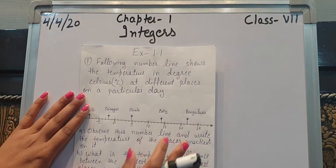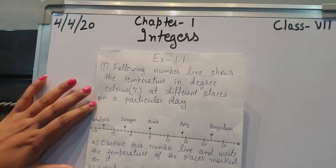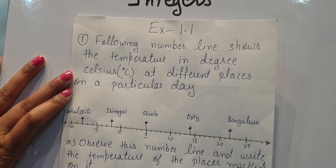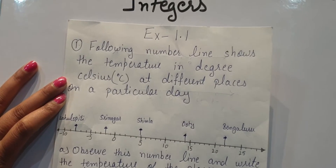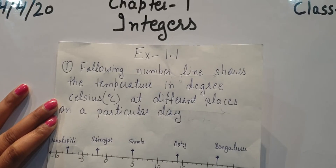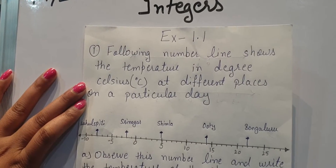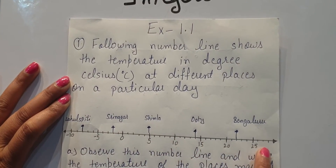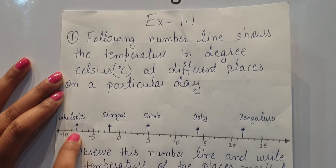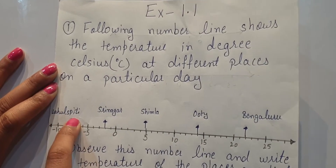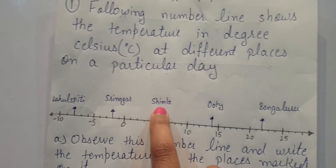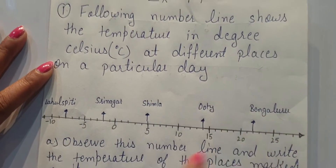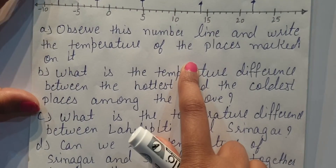First we will do the first question of your NCERT book. We will first read the question: 'Following number line shows the temperature in degrees Celsius at different places on a particular day.' The places marked on this number line are: Lahul Spiti, Srinagar, Shimla, Ooty, and Bengaluru. First we will read each point of the question, then we will solve it.